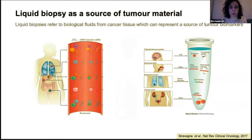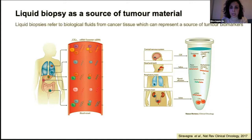Liquid biopsy refers to biological fluids from cancer tissue, which represent a source of tumor biomarkers such as circulating tumor cells, ctRNA, ctDNA, exosomes, microRNAs, and proteins. Although blood is the most typical source, nearly all biofluids in the body can be used, and this depends on the anatomic location of the primary and metastatic tumor. For example, in central nervous system tumors, CSF is a powerful source for these biomarkers.